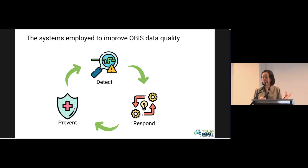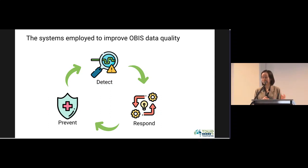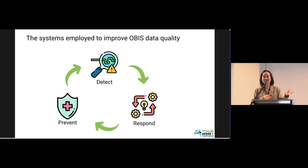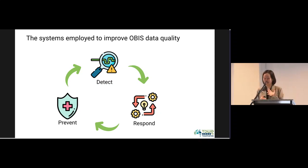We have objectives and goals to guide our planning, but to make progress we need a system. The system we employ for this project team I call the Prevent, Detect, and Respond system. We need to prevent data quality issues before they enter the system; if they do get in, we need to detect them; and when detected, we respond — and this is a continuous cycle.